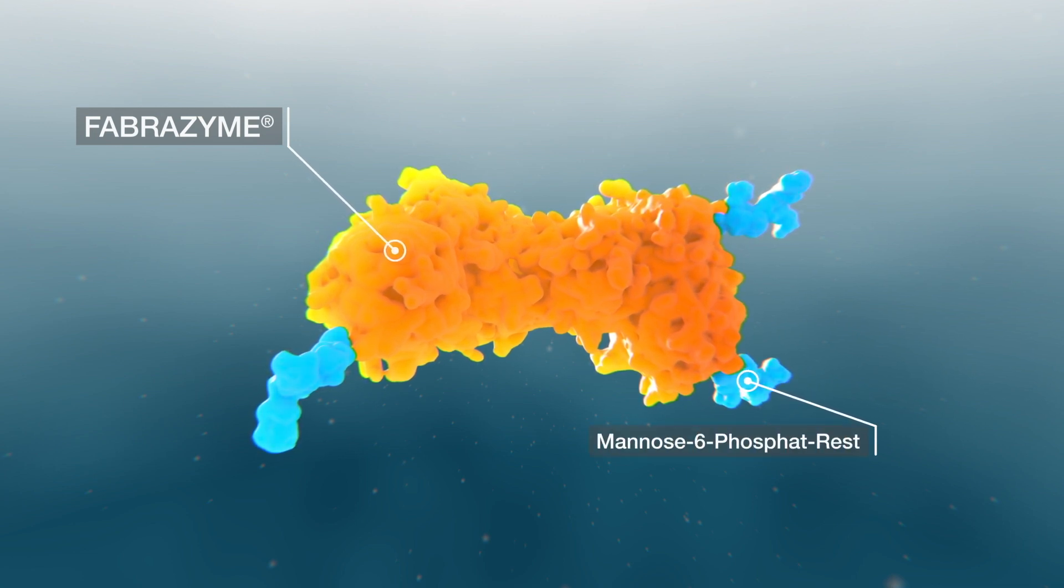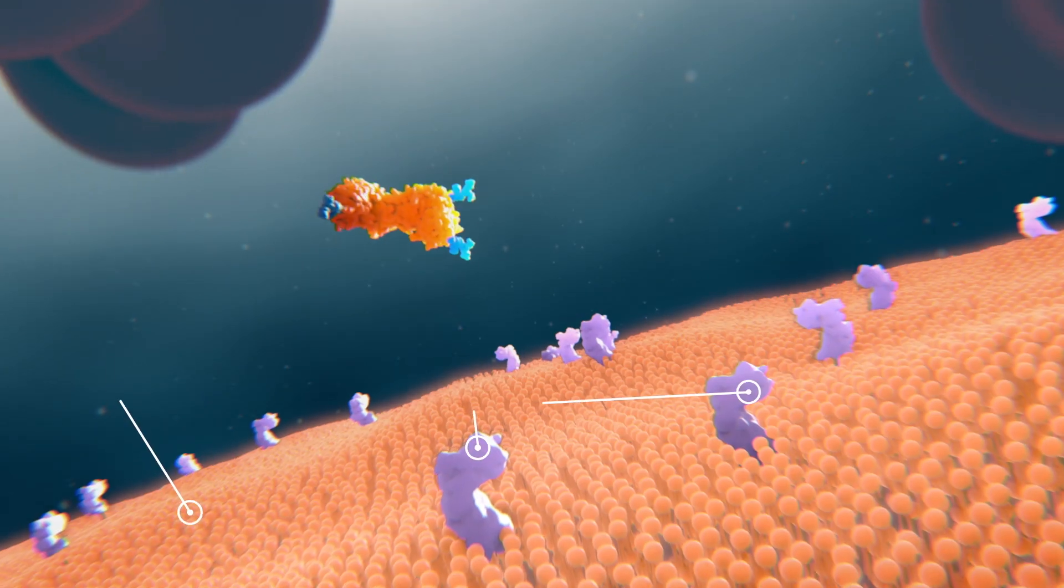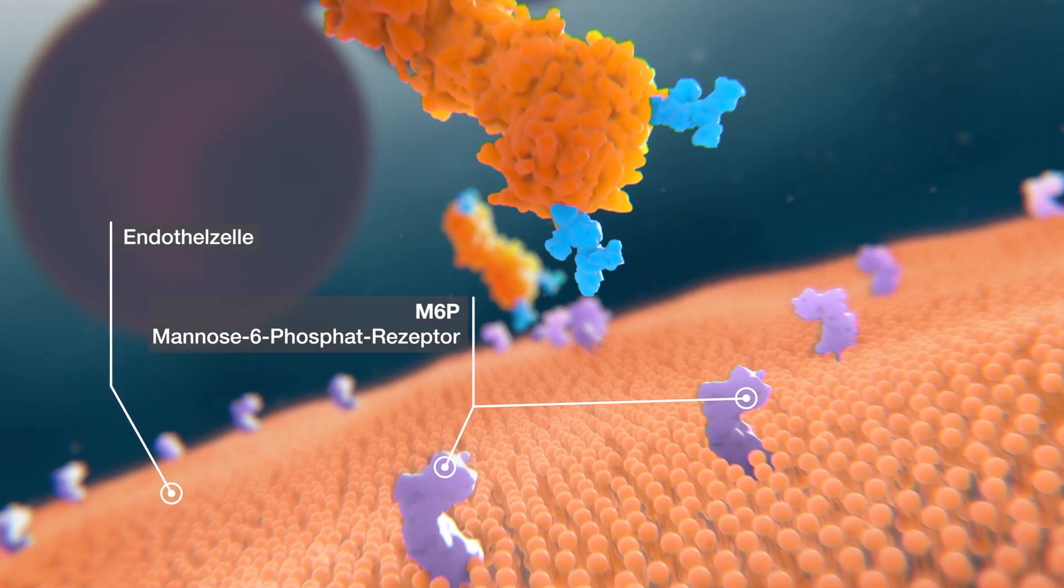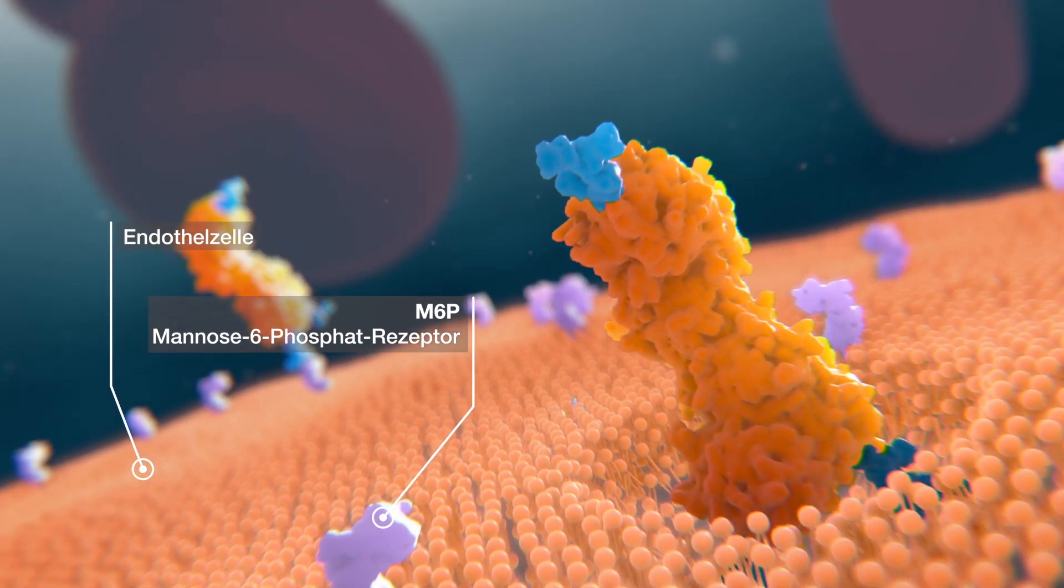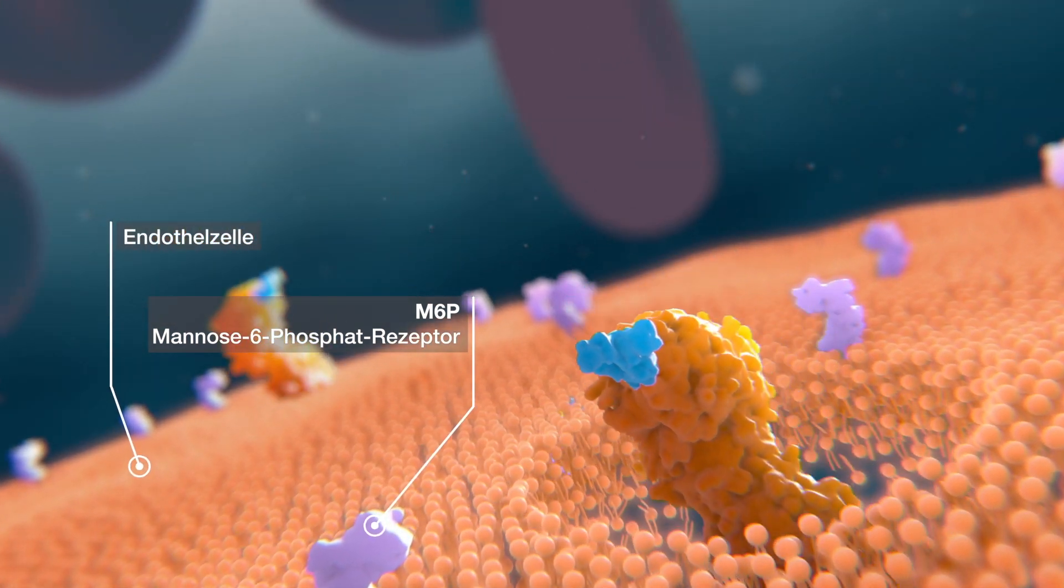Mannose-6-phosphate is essential for the uptake into the cell and the transport to the lysosome where Fabrizyme acts. Fabrizyme is taken up by binding the mannose-6-phosphate residues to the corresponding receptors on the cell surface.